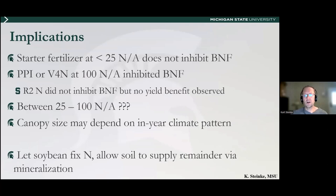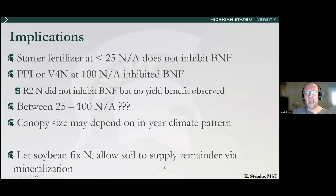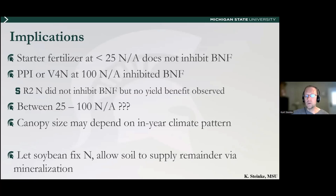Here's what we know. Starter fertilizer at 25 units of N and under has not reduced the plant's ability to fix nitrogen. Some years we've seen a yield response; some years we haven't. When we applied around 100 units of N — PPI or V4 — we tended to inhibit fixation, essentially replacing fixed N with synthetic fertilizer. When we applied N at R2, we did not inhibit N fixation but also saw no yield benefit — probably too late in that scenario. Our gray area is between 25 and 100 units of N. We'll do more testing to find where that inflection point is.